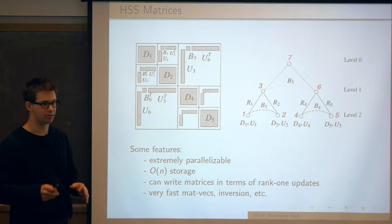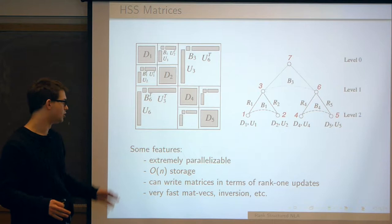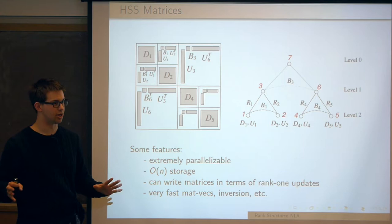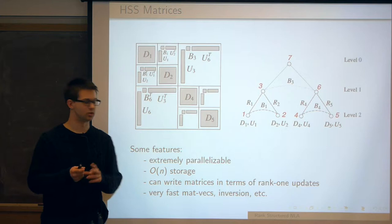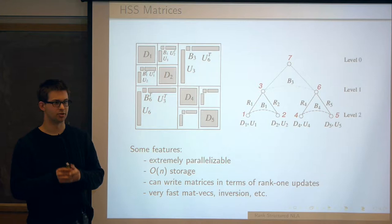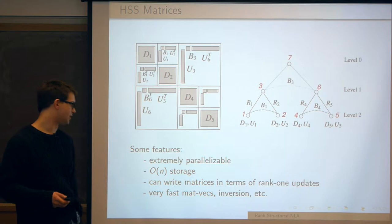HSS matrices allow us to write everything in terms of a nested, low-rank hierarchical basis using a binary tree. They are very parallelizable, and all the eigensolvers I'm going to share today are fully parallelizable. We haven't necessarily implemented it, but there's nothing stopping us in theory. ON storage — especially when you want to talk about eigenvectors — is a huge advantage, because there are not a lot of eigensolvers that give full eigen decomposition in ON storage, but HSS can. We can write the matrix entirely in terms of block diagonal plus rank-1 updates.